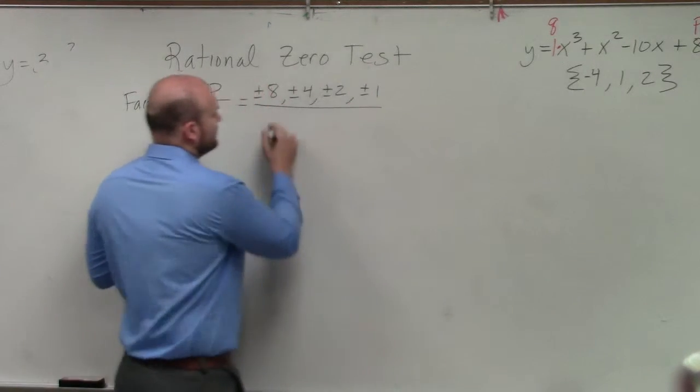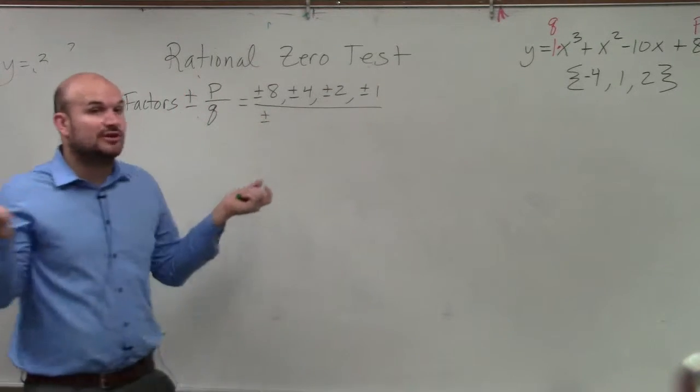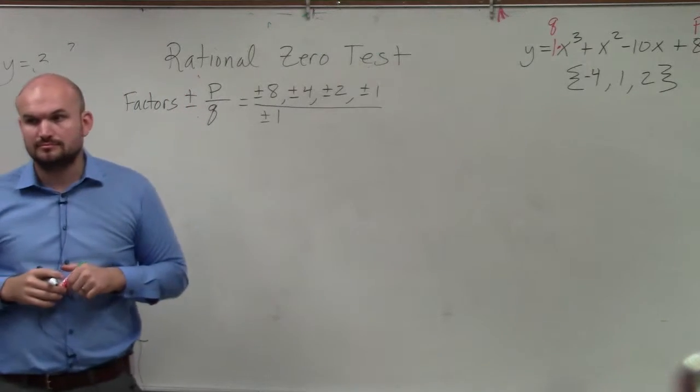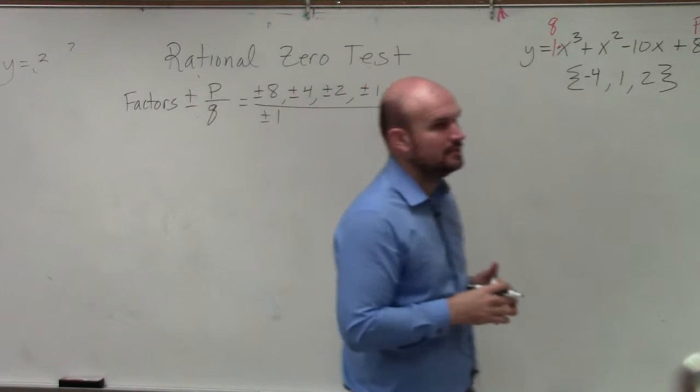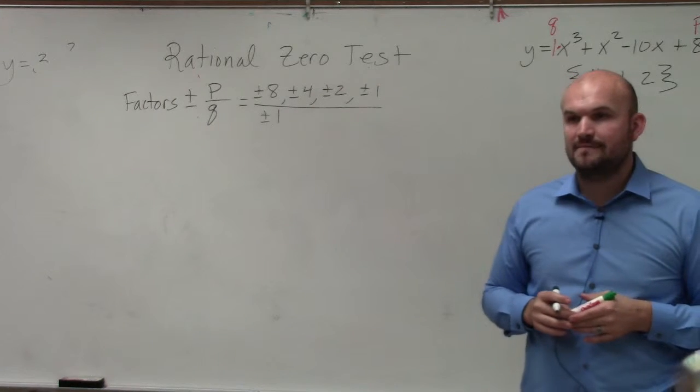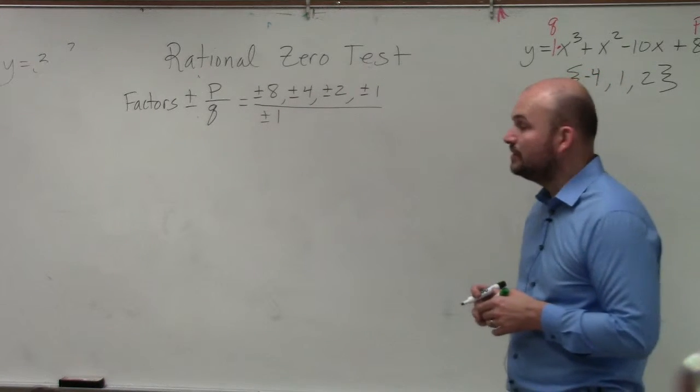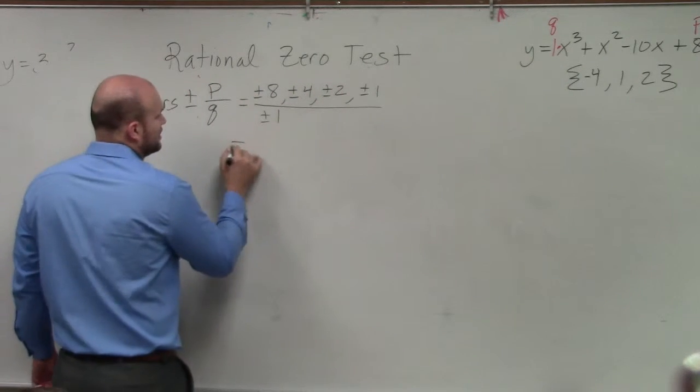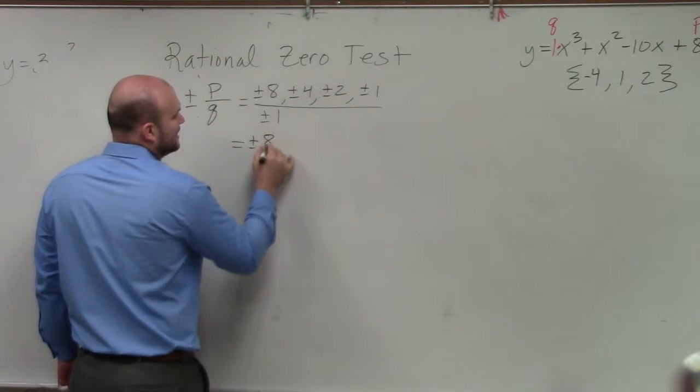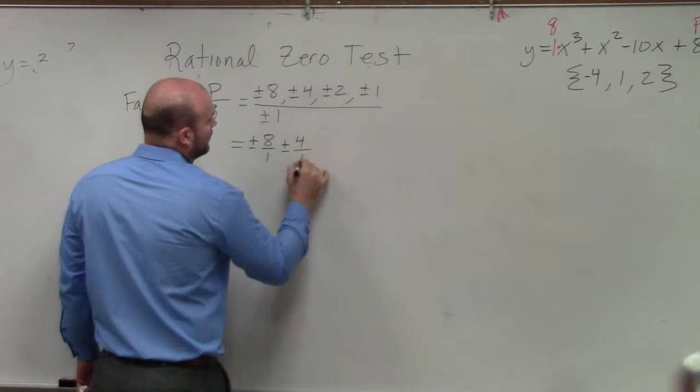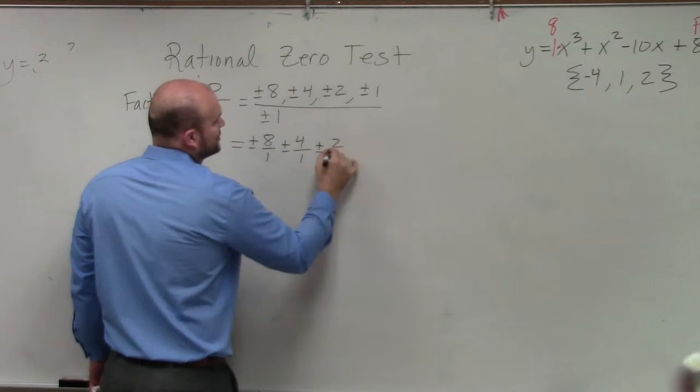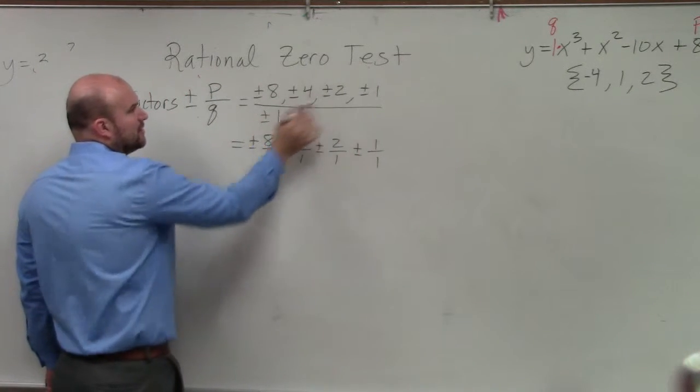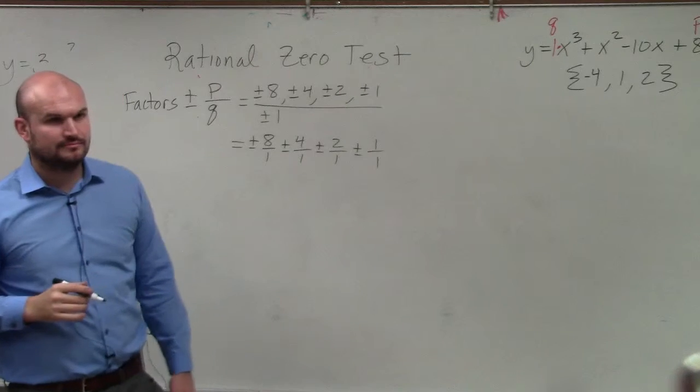Divided by the factors of your leading coefficient. Well, the only factors of 1 are plus or minus 1, OK? Then what you simply do is write in all of the possibilities of all of your p's over your q's. So we could have plus or minus 8 over 1, plus or minus 4 over 1, plus or minus 2 over 1, and plus or minus 1 over 1. Do you guys see how I just put every numerator over the denominator?